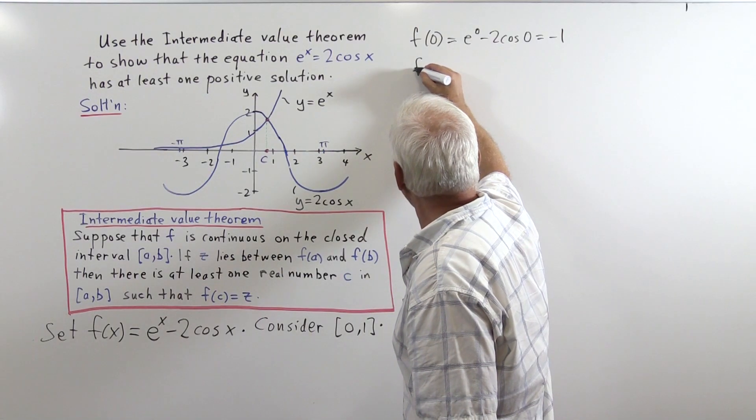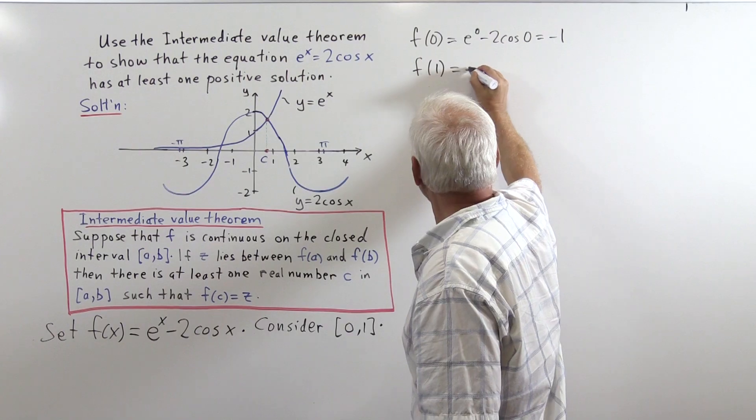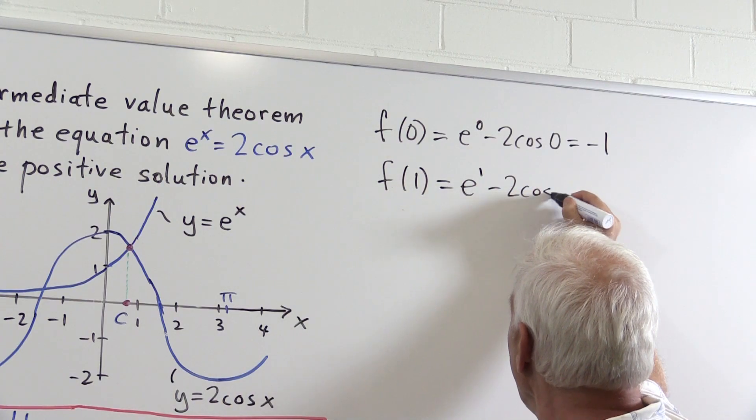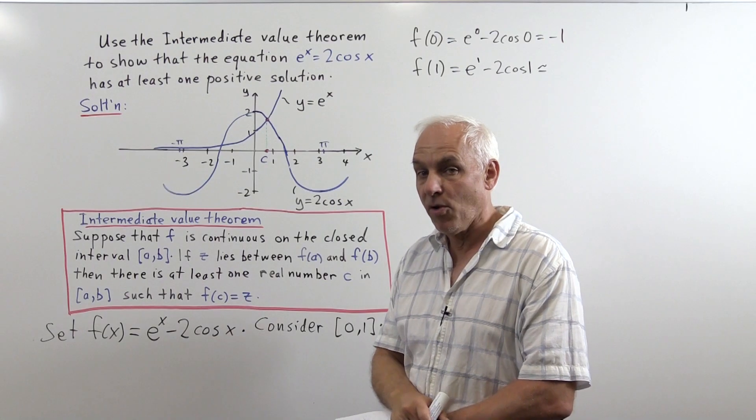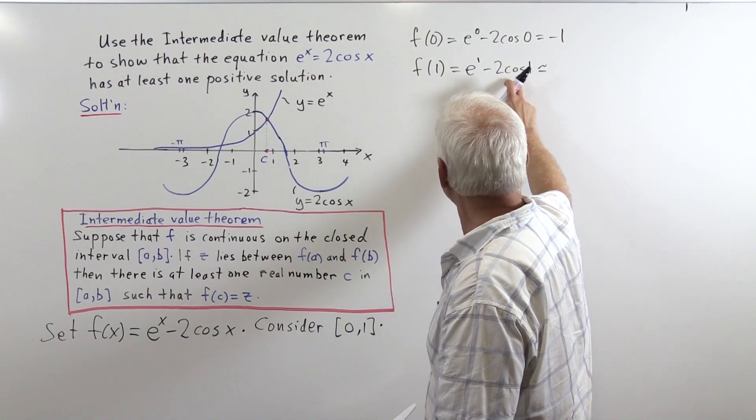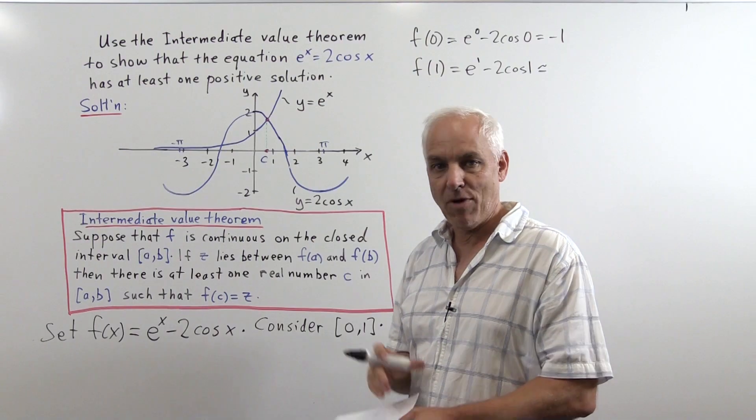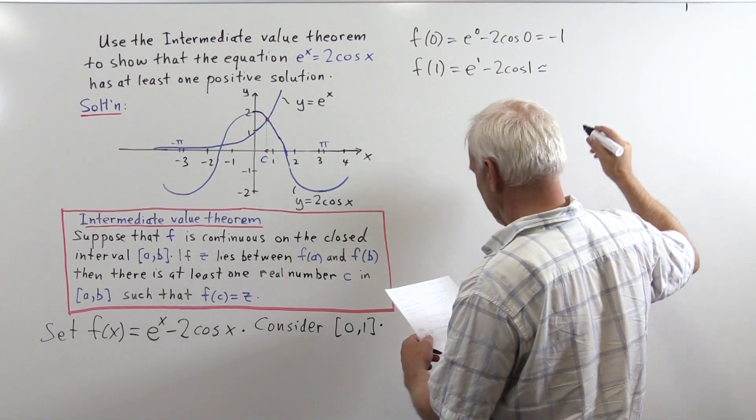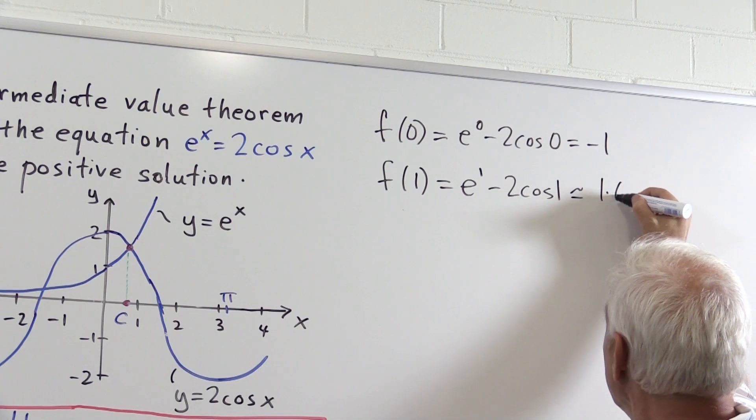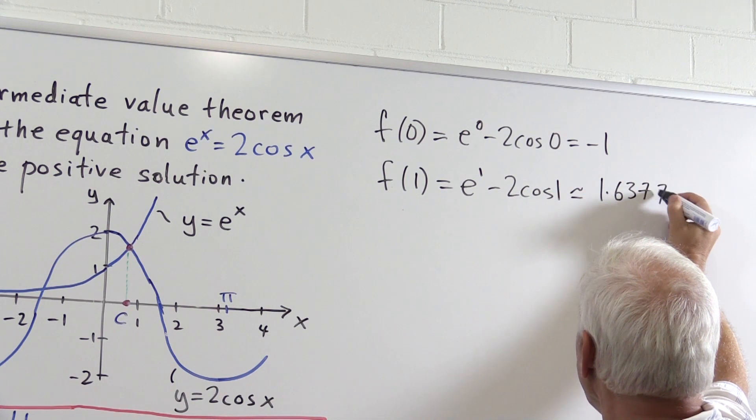And we also look at f(1). That's going to be e^1 - 2cos(1). Well, e is roughly about 2.7 and -2cos(1), whatever it is, is at most -2, so this is going to be positive. In fact, it's about 1.6377.